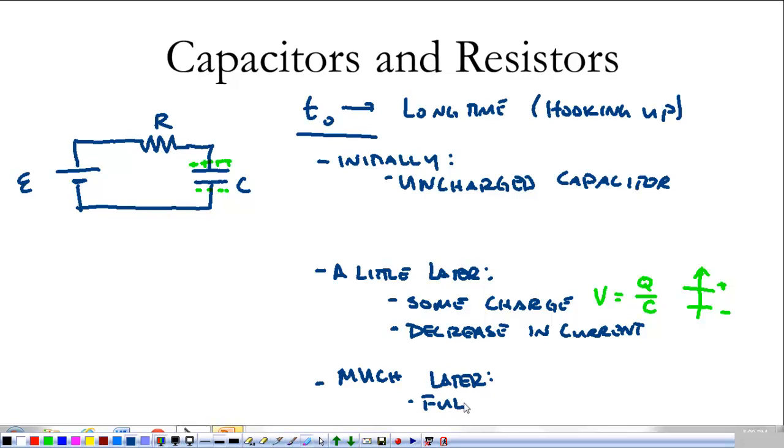This capacitor is now pushing against the battery. A little later, much later, we have a full capacitor. And we could say that the voltage of the capacitor is equal to the original EMF of the battery, which means that the capacitor is pushing with an electromotive force equal to that with which the battery is pushing. So at this point, much later, we have no current.